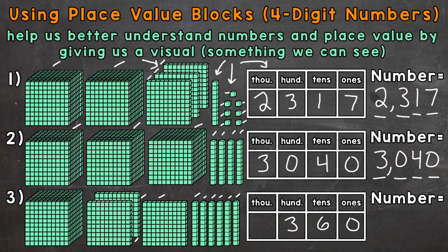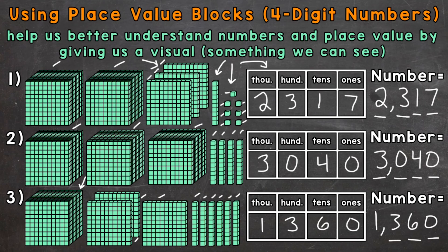And then lastly, one group of 1000 right here, so we represent that by putting a one in the thousands place — that one has a value of 1000. So our standard form is 1360: zero ones, six groups of 10 which has a value of 60, three groups of 100 which has a value of 300, and one group of 1000 which has a value of 1000.